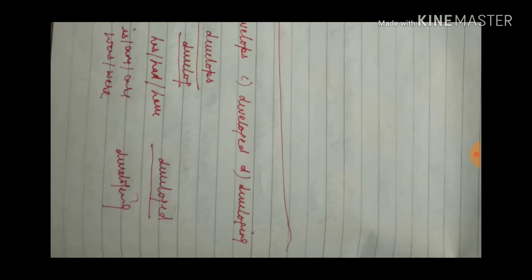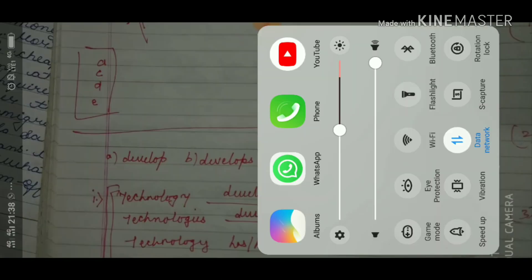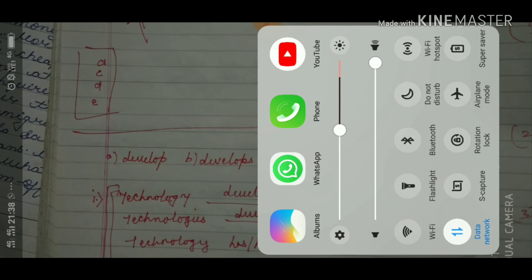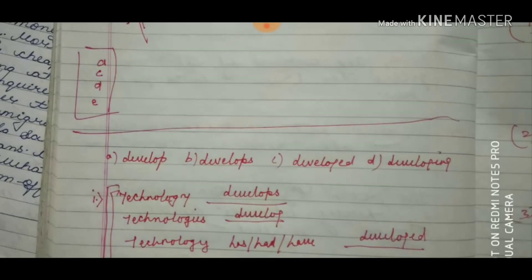If the sentence is in past tense, obviously use the second form of the verb. For 'develop' — develop, developed, developed — second and third forms are the same. For example: go, went, gone. Past tense gives 'went'; with has/have/had, use 'gone.' Be very focused when performing these things.